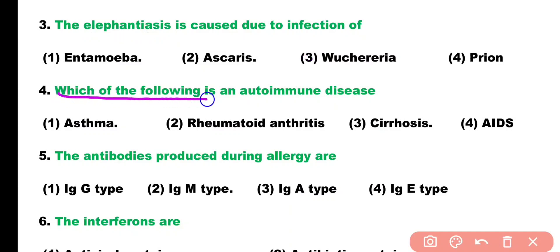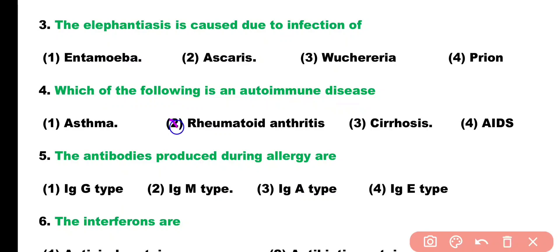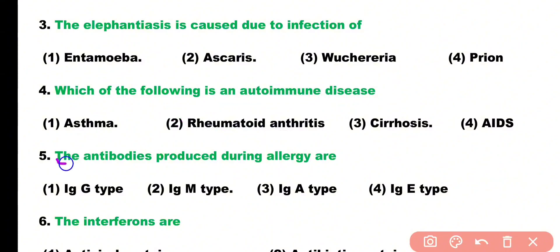Question number four: which of the following is an autoimmune disease? Options: asthma, rheumatoid arthritis, cirrhosis, AIDS. Correct answer is option two — rheumatoid arthritis is an autoimmune disease.